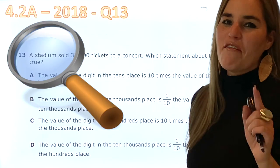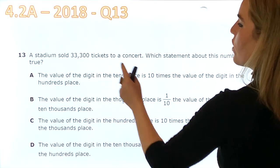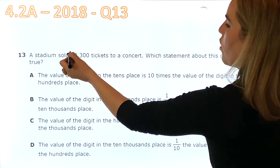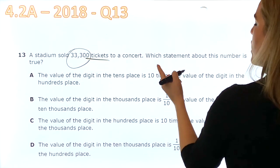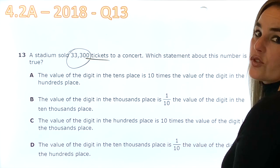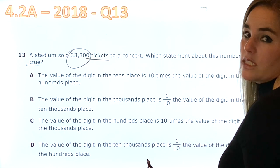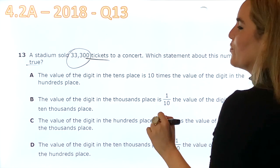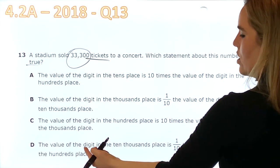Step 1, find the keywords. A stadium sold 33,300 tickets to a concert. Well, this number is important and they're tickets. Which statement about this number is true? Well, true is another keyword because sometimes they're asking for something that is not true. And then we have options A, B, C or D.